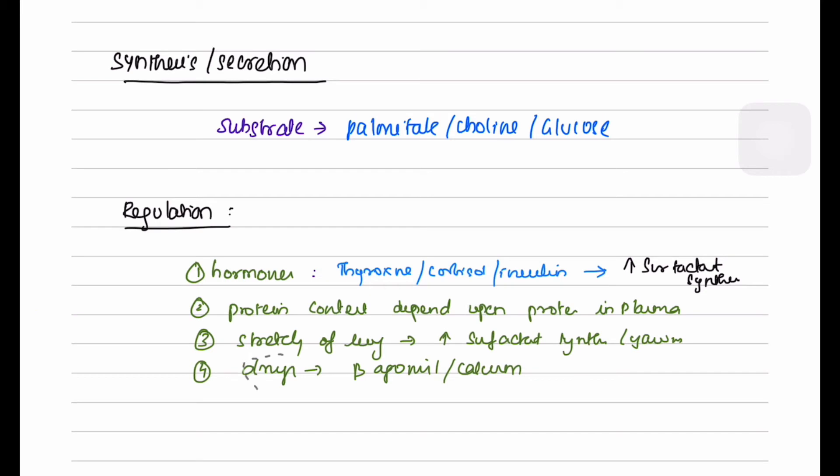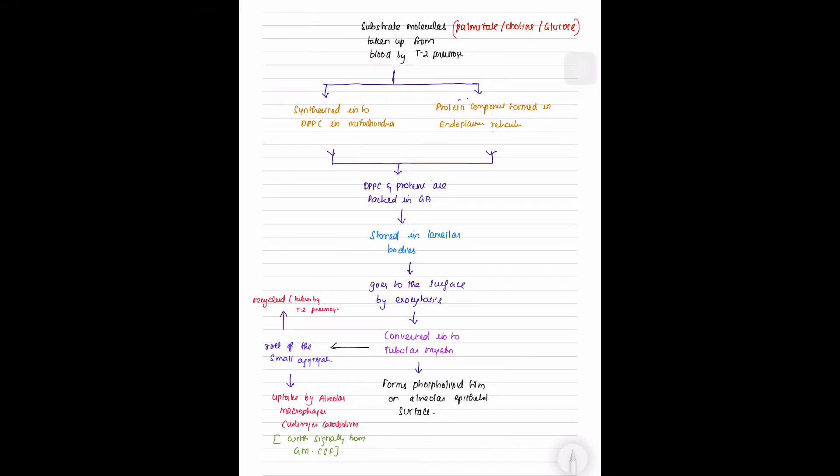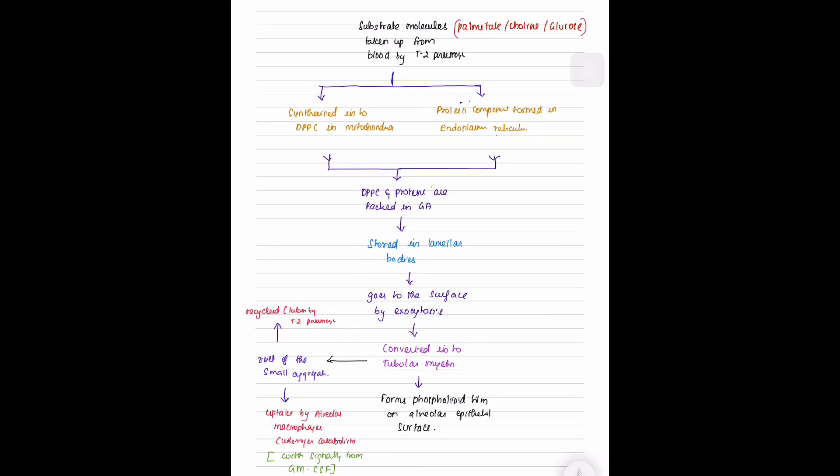Drugs like beta-agonists and calcium can increase surfactant synthesis. For synthesis of surfactant, substrate molecules palmitate, choline, and glucose are taken up from the blood by type 2 pneumocytes. They are synthesized into dipalmitoyl phosphatidylcholine in mitochondria, and the protein components are formed in the endoplasmic reticulum.